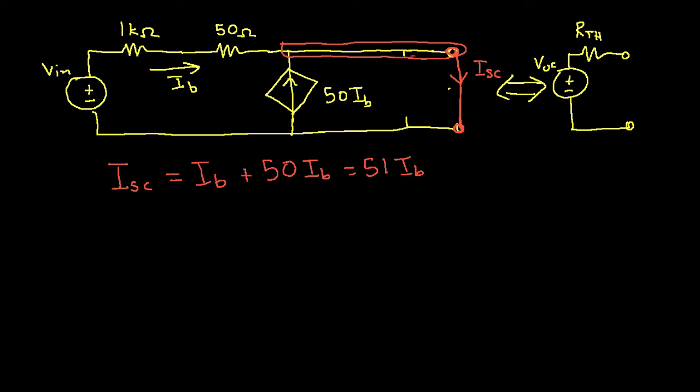Okay, now to get IB, we need the voltage across the 1k ohm and the 50 ohm resistor in series. And this voltage, it turns out, will be the same as VN.